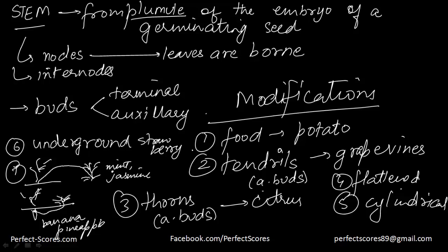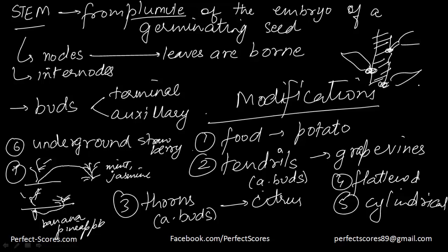To recap: the stem comes from the plumule of the embryo of a germinating seed. It has nodes and internodes where leaves are born. There are two kinds of buds — terminal and axillary. Modifications include food storage as in potato; tendrils as in grapevines; thorns as in citrus; flattened or cylindrical forms; underground growth for propagation in strawberries; runners over the ground as in mint and jasmine; and horizontal underground growth as in pineapple and banana. That is all you need to know about the stem.